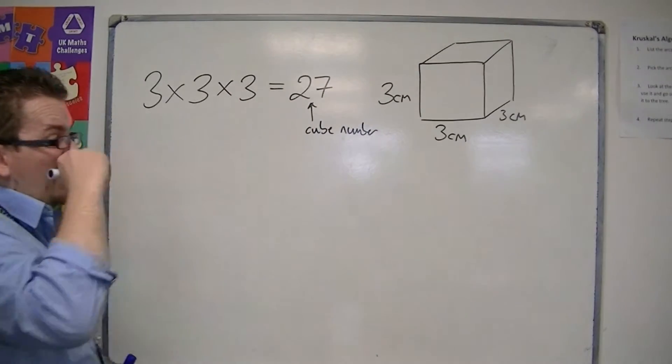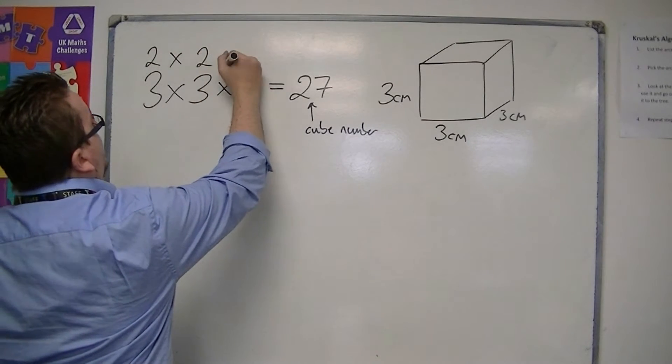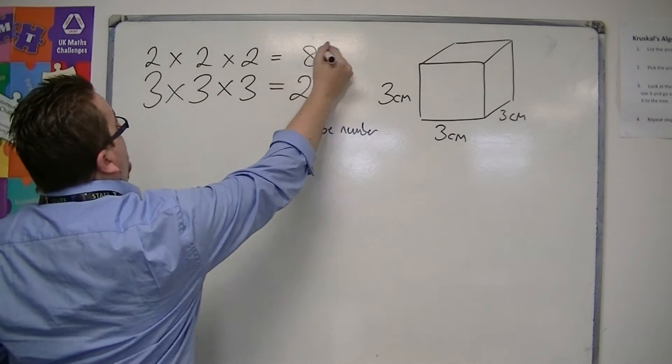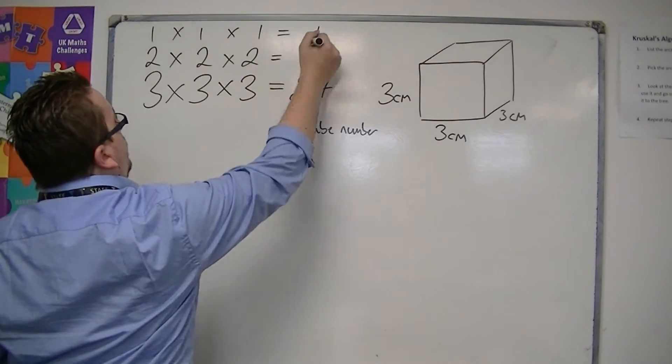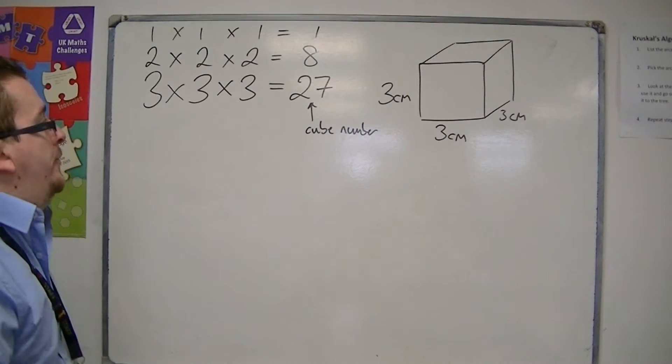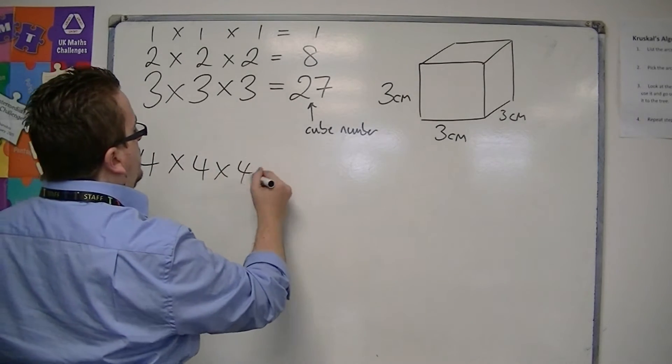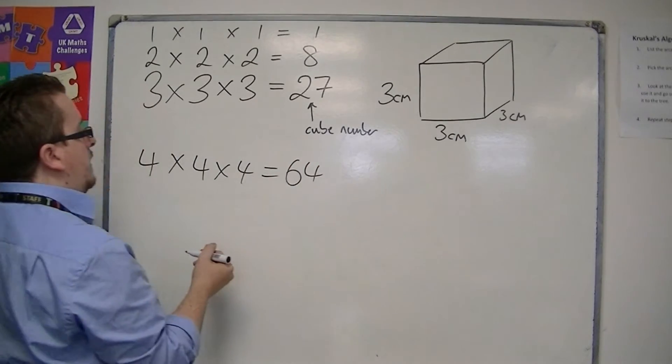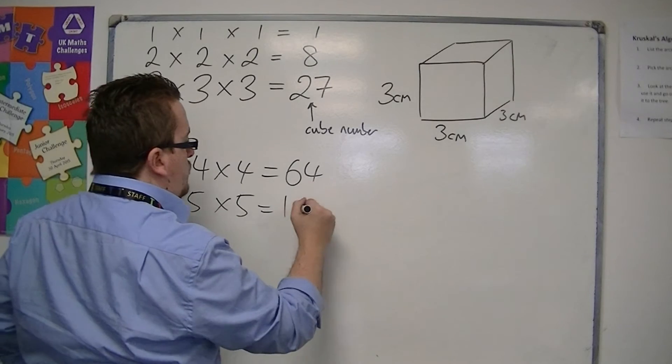We can also work out the other cube numbers, like 2 times 2 times 2, which is 8. And 1 times 1 times 1 is 1. So 1, 8 and 27 are cube numbers. 4 times 4 times 4 is 64, and 5 times 5 times 5 is 125.